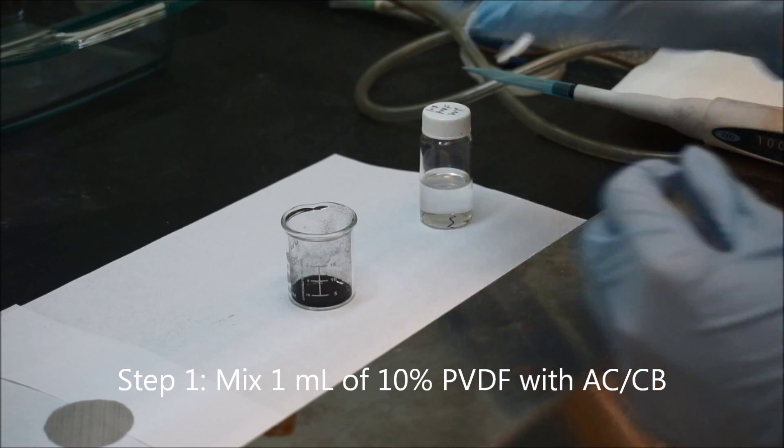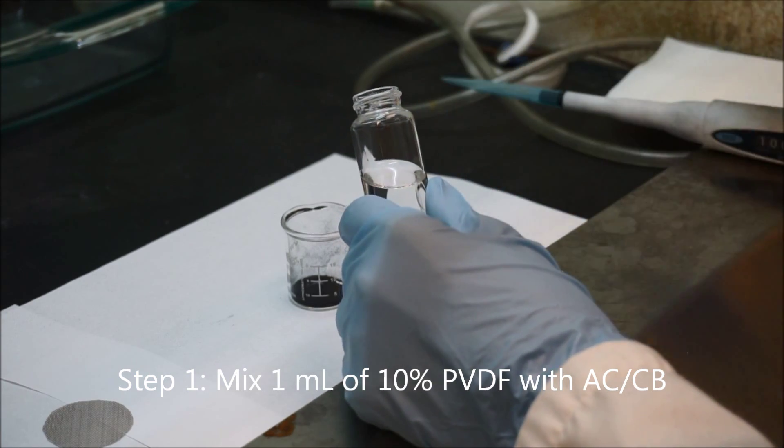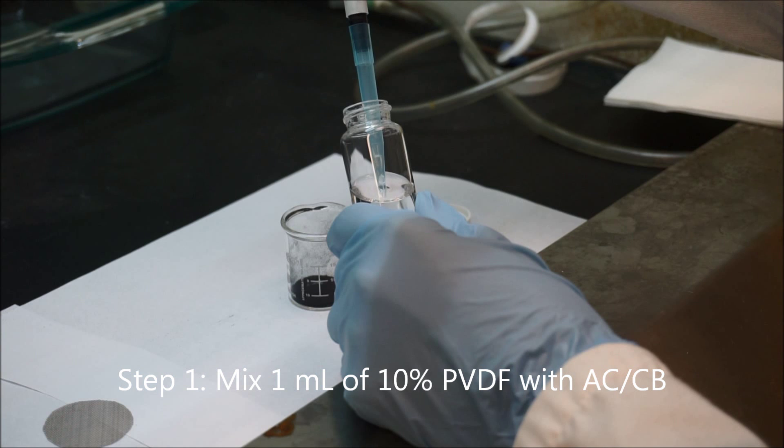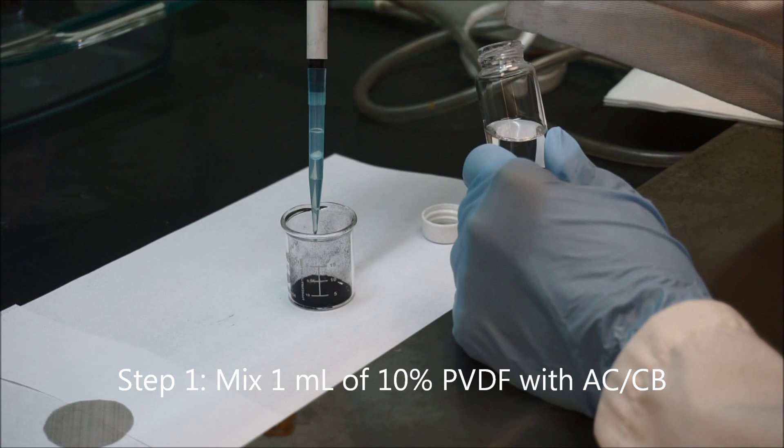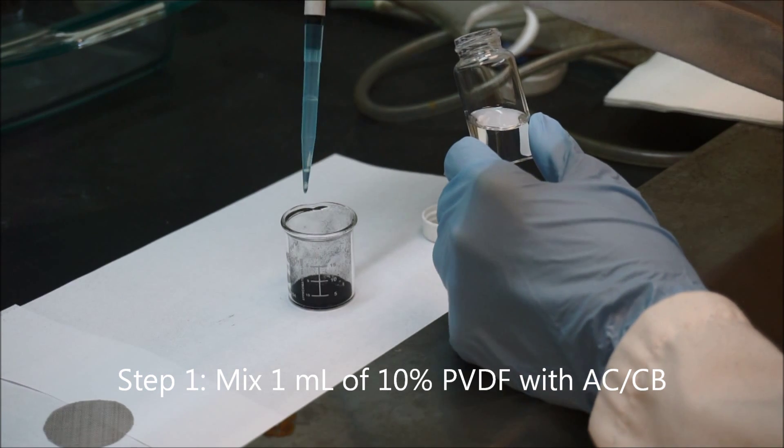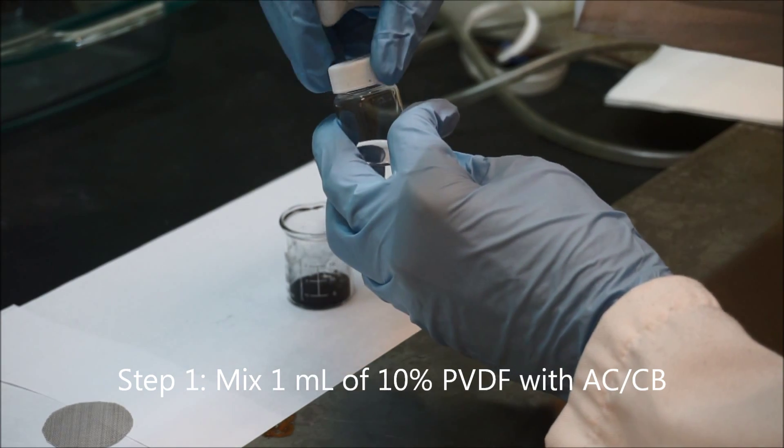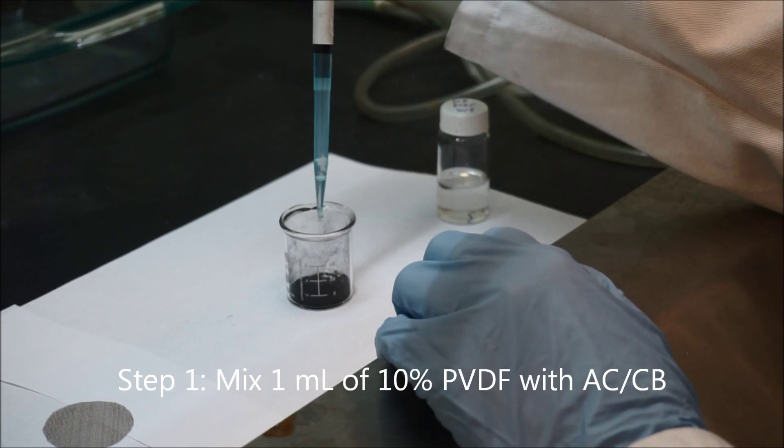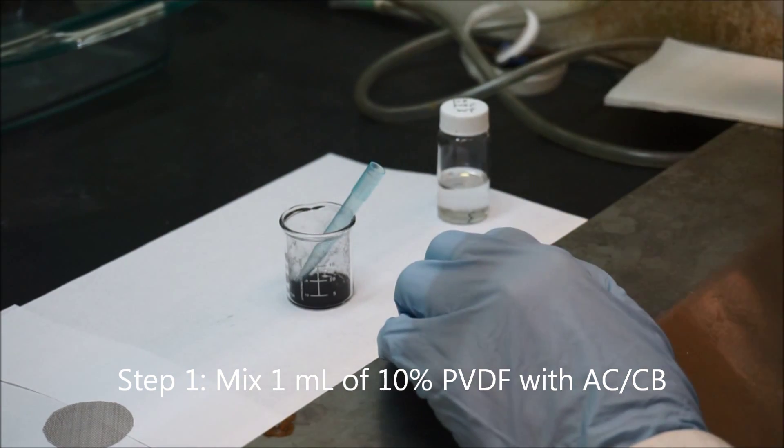So the first step is to mix the PVDF solution with the active carbon and carbon black mixture. We use a pipette to get out one milliliter of the PVDF solution and then fill the solution into the beaker. The solvent is a bit toxic so remember to cap the bottle after you take out the solution. Then use the pipette to mix the carbon powder with the PVDF solution.